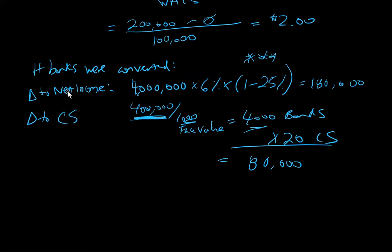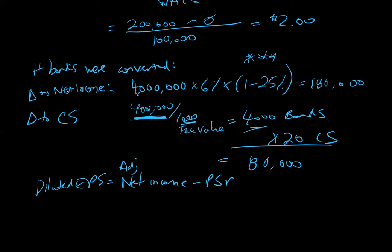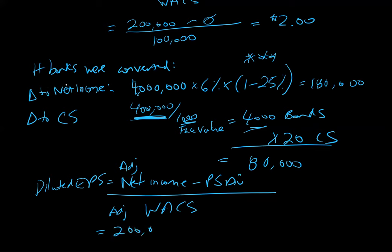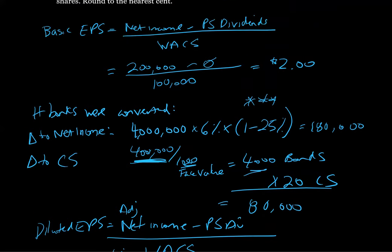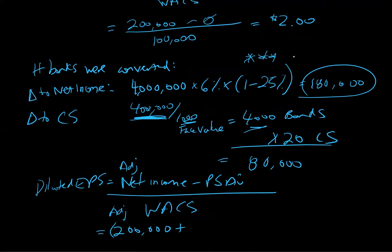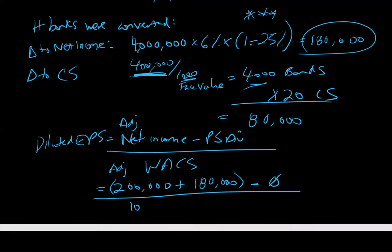Now let's calculate diluted EPS: adjusted net income minus preferred share dividends, divided by adjusted weighted average common shares. Net income before was $200,000, and we add back $180,000 — that's a pretty big add-back, nearly doubling net income. There are no preferred share dividends. Shares outstanding before were 100,000, and we add 80,000. Remember, we're adding to our basic EPS figures, not just calculating on the difference — it's the whole thing. This gives us earnings per share of $2.11.